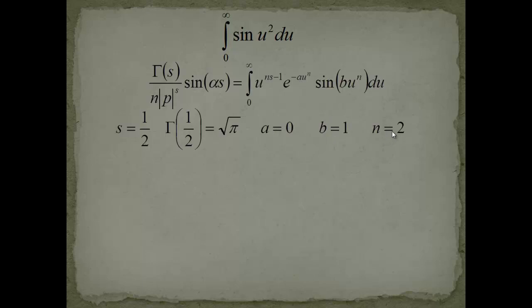P equals to 1. N equals to 2. This is the power of our variable U. Then S was chosen as 1 half in order to make S multiplied with N equal to 1. So this is cancelled out here.